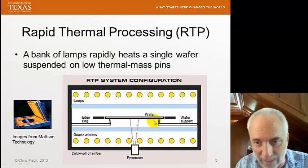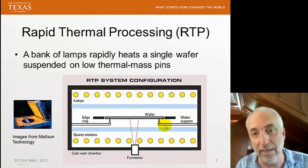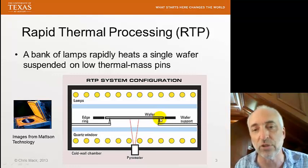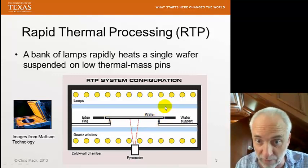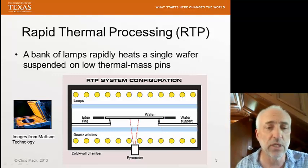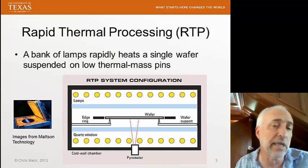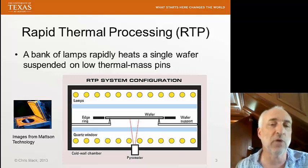We put the wafer in a chamber on very low-mass pins. We want low-mass pins because we don't want the heat to drain off through conduction. We put it in a chamber with quartz windows, and then we use very bright heat lamps that heat up the wafer optically, putting so much energy that it can ramp to a high temperature very, very quickly.